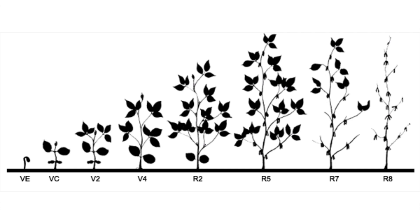Have a look at the chart, figure out where your beans are, use it as a guideline. You want to scout your whole field — you don't just want to look in the biggest area of the field. You want to get a representative average of the stage that the whole field would be at.